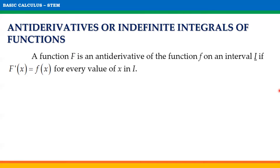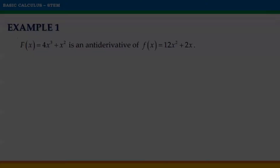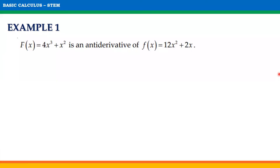Note that capital F is called an antiderivative of f rather than the antiderivative of f. In general, once a single antiderivative is known, other antiderivatives can be obtained by adding constants to the known antiderivative. That is why an arbitrary constant c is usually added to account for this.